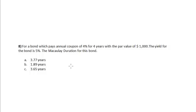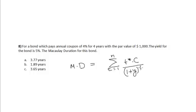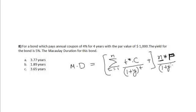The Macaulay duration, written as MD, is the summation from t equals 1 to n periods of t times the present value of the coupon, plus n times the principal or face value divided by (1 + y) raised to the power of n. The term P divided by (1 + y)^n represents the present value of the face value, and C divided by (1 + y)^t represents the present value of each coupon, all divided by the current bond price.